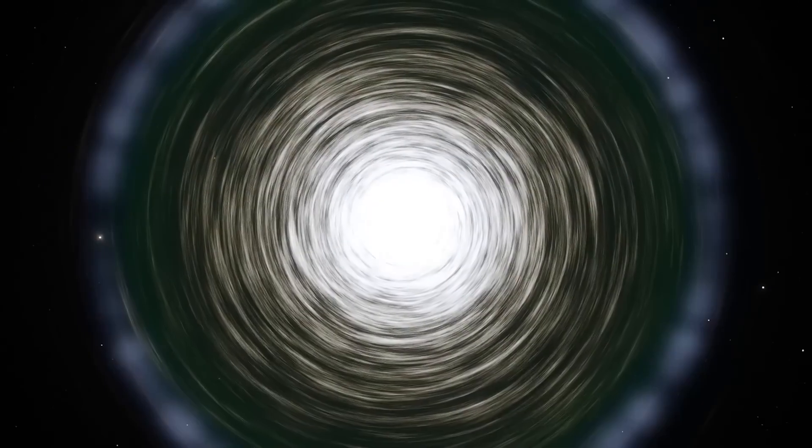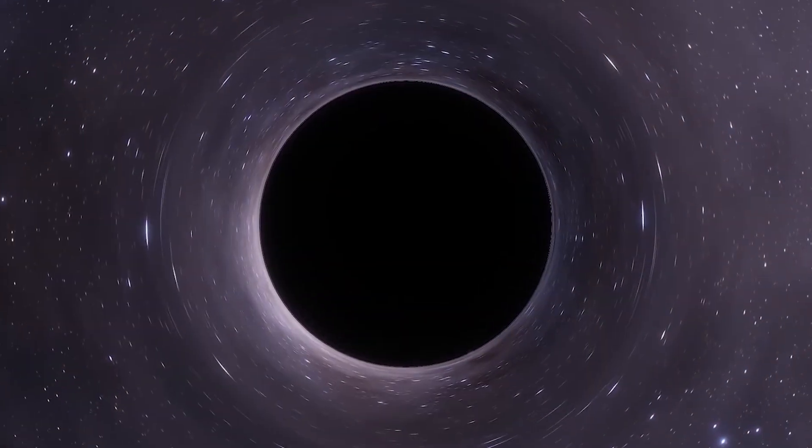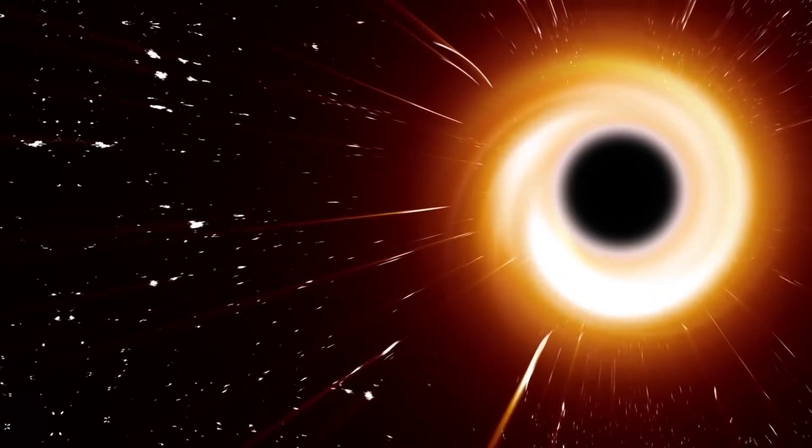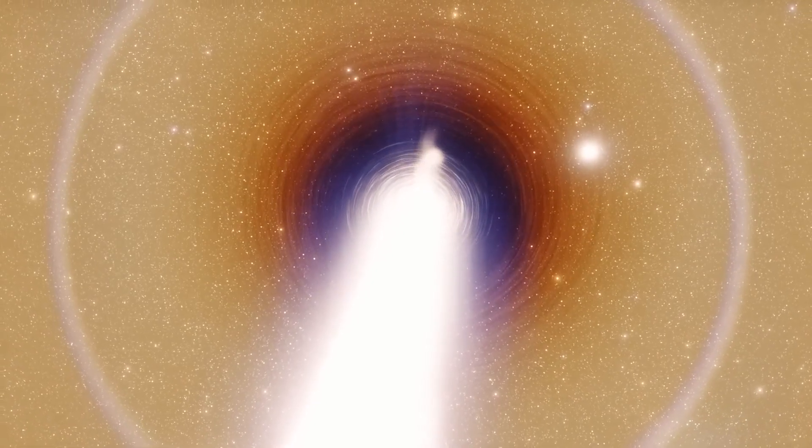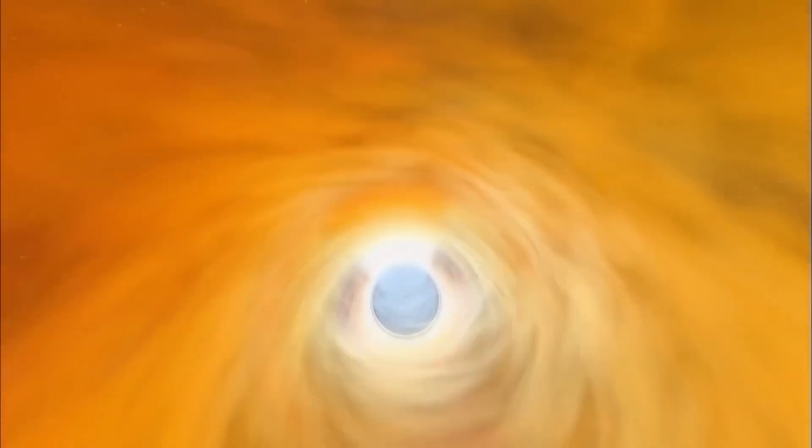To simplify, black holes have a unique feature known as the event horizon, which is a boundary that produces different outcomes for objects inside and outside it. Inside the event horizon, objects are destined to be consumed by black holes due to the intense curvature of space-time. On the other hand, outside the event horizon, objects can escape the gravitational influence of the black hole if they have sufficient velocity or acceleration.